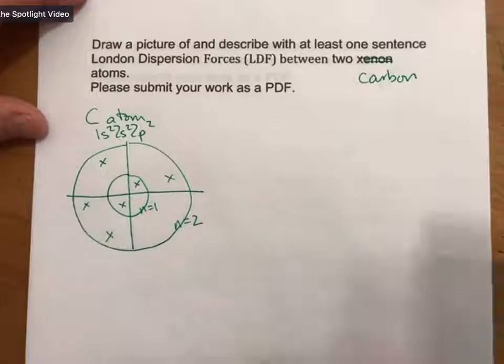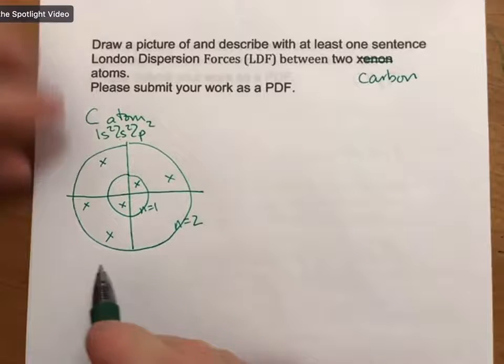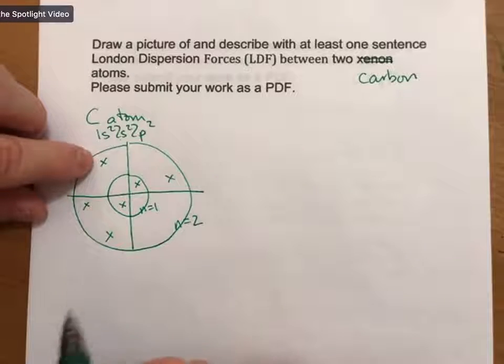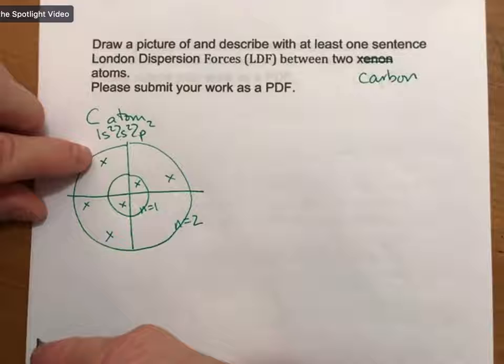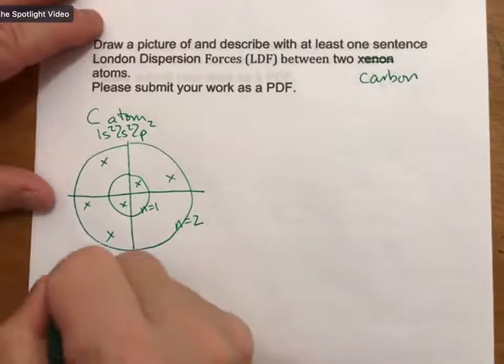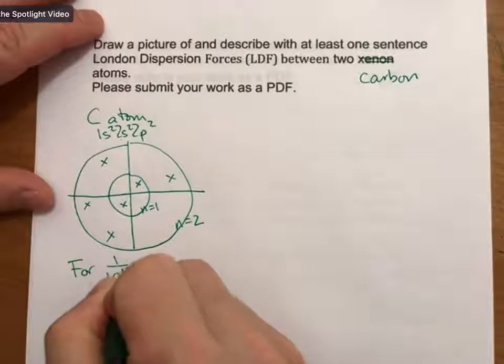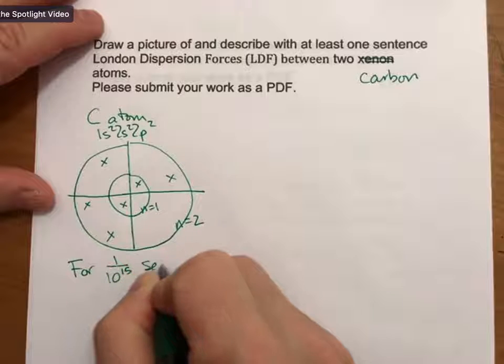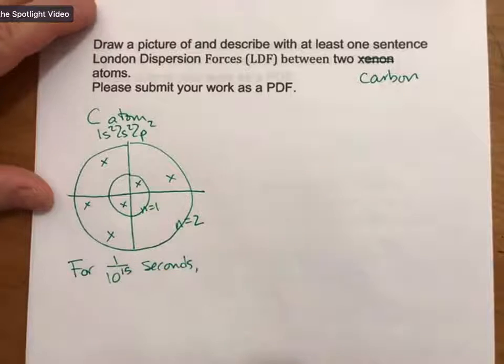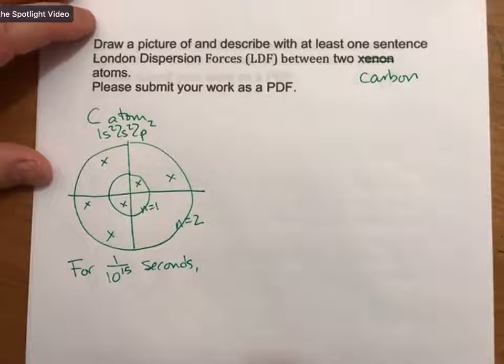And the idea here is that for an instant, or for one over 10 to the 15th seconds, there is an imbalance in the distribution of electrons.